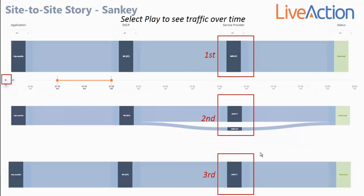Another great feature of the Sankey diagram is the ability to replay data. At the bottom left of the window is a play button, and when you play back the traffic, the time bar scrolls across the screen. For voice traffic, you can see it start out on the MPLS network, then over time it flips from MPLS to INAT1, and finally ends up on just INAT1's path.